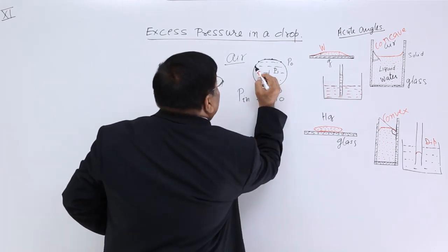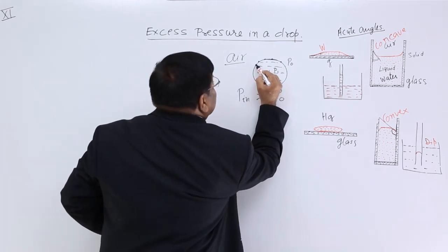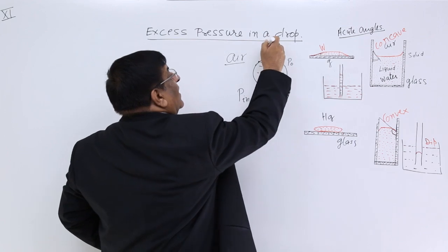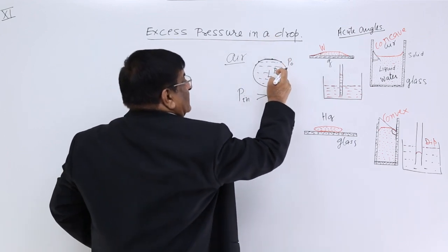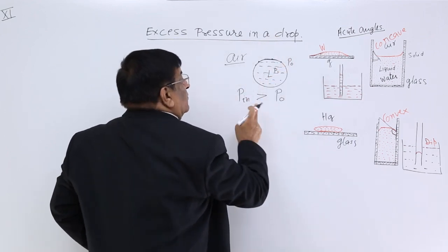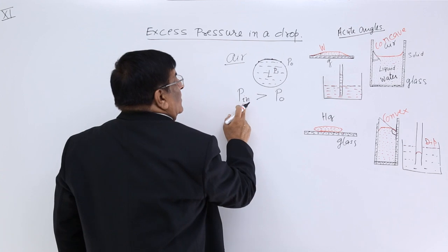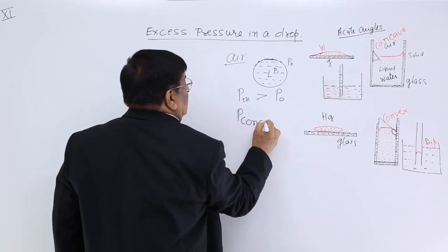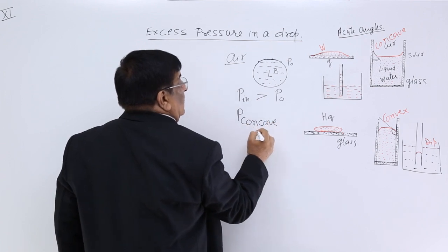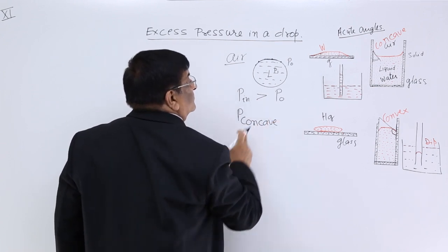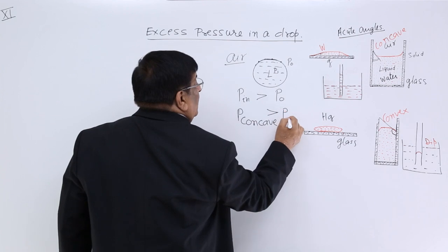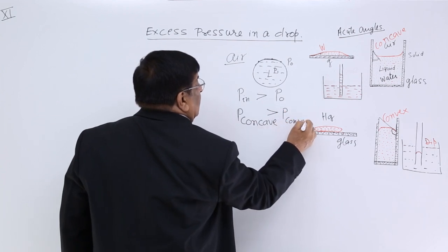If you see the surface from inside, it is concave. If you see it from outside, it is convex. The pressure is always more on the concave side. Pressure on the concave side is always greater than pressure on the convex side.